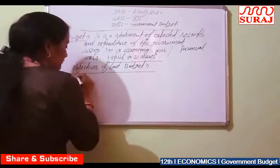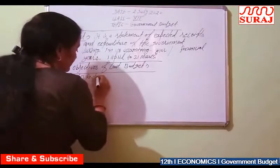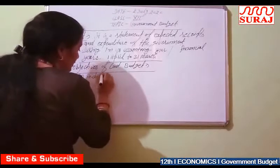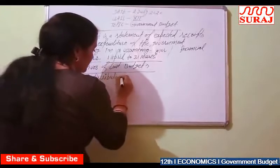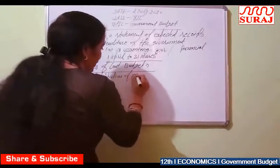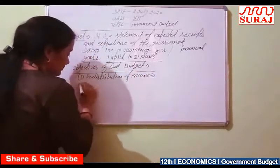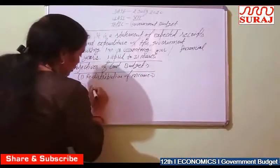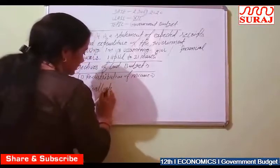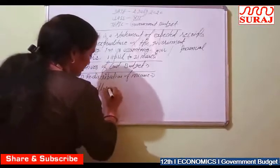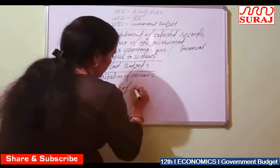The main objectives are: first is redistribution of income, and next is re-allocation of resources.